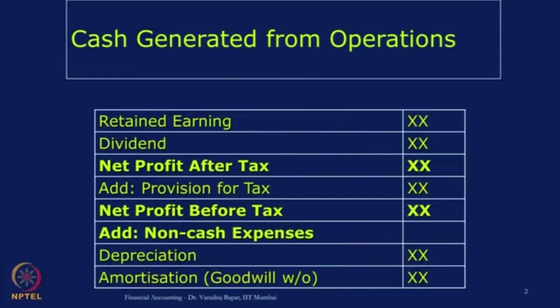If you remember, in the cash flow statement there are 3 sections: one is cash flows from operations, second is cash flows from investing activities, and third is cash flows from financing activities. In the first part, we calculate the cash generated from day-to-day activities of the business. Normally it is done using the indirect method.